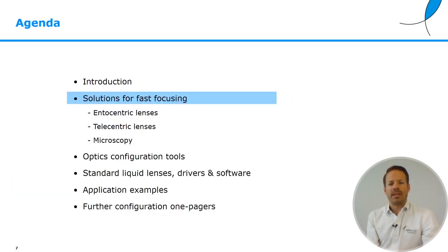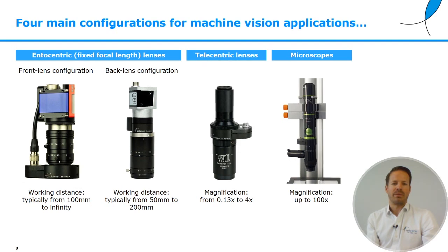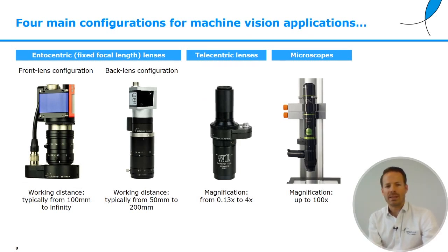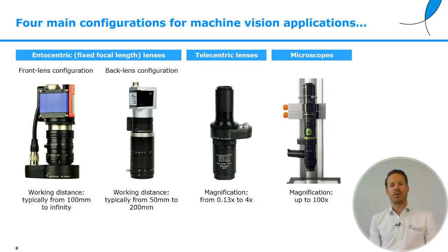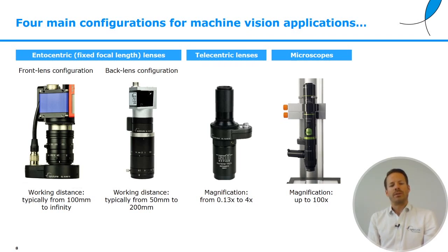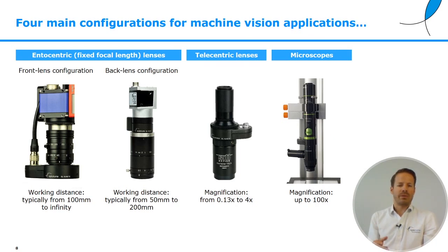Let's go through the optical solutions for the three typical fields: fixed focal length lenses, telecentric lenses, and microscope-type systems. For fixed focal length lenses, also called endocentric lenses, we usually talk about a front lens or back lens configuration, referring to where the liquid lens is placed. By placing the liquid lens in the front, we can achieve fairly large working distance ranges, whereas placing it at the back typically gives shorter distances.